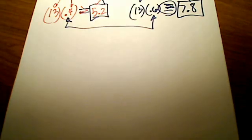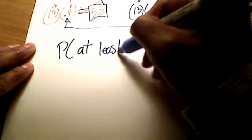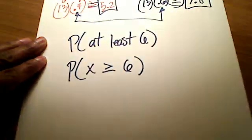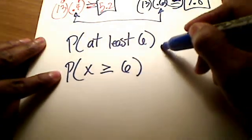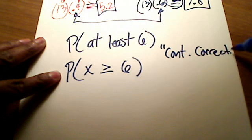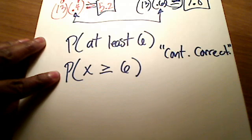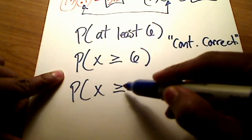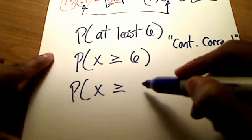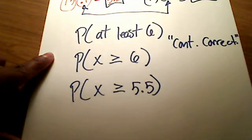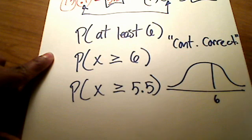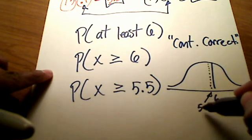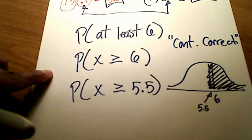I'm looking for the probability of at least 6, which means x greater than or equal to 6. Using continuity correction — as covered in a previous video — if I want to include 6 and shade to the right, I need to back up just a little to the left of 6. So instead of 6, I use 5.5. I'm shading everything from 5.5 and beyond to the right.